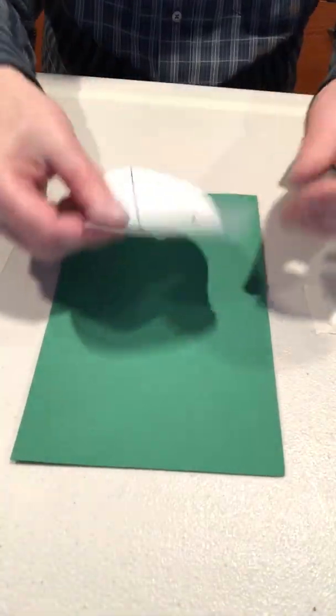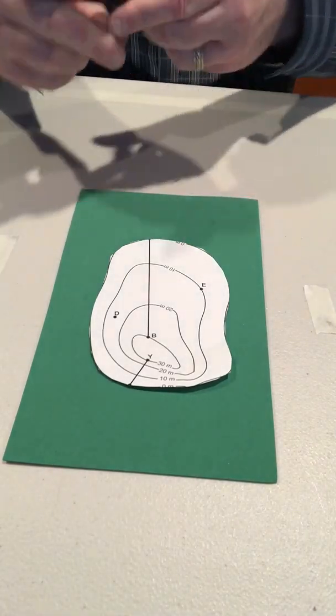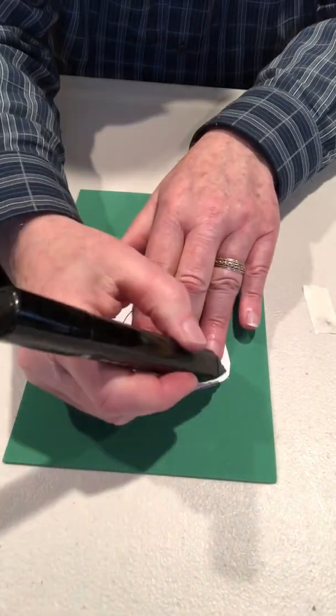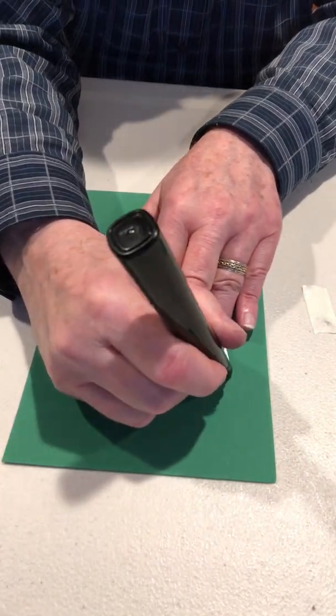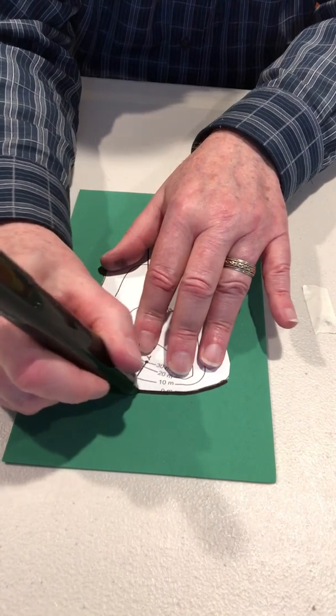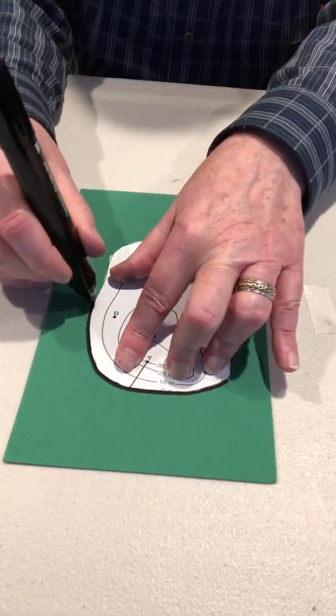And now I'll place it on top of the foam paper, and then using the marker, I will trace around the edge of the foam paper. It has a chiseled tip, so I'm attempting to use the narrow end as I trace along the outside.